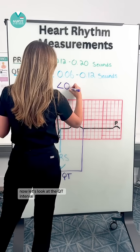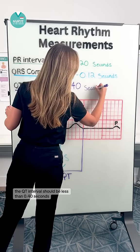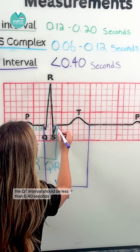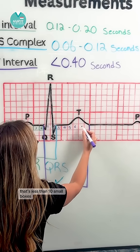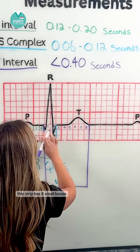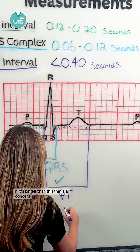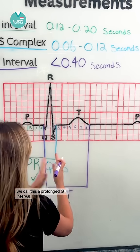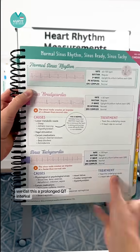Now let's look at the QT interval. The QT interval should be less than 0.40 seconds — that's less than 10 small boxes. This strip has eight small boxes, so it's a normal QT interval. If it's longer than this, that's a concern — we call this a prolonged QT interval.